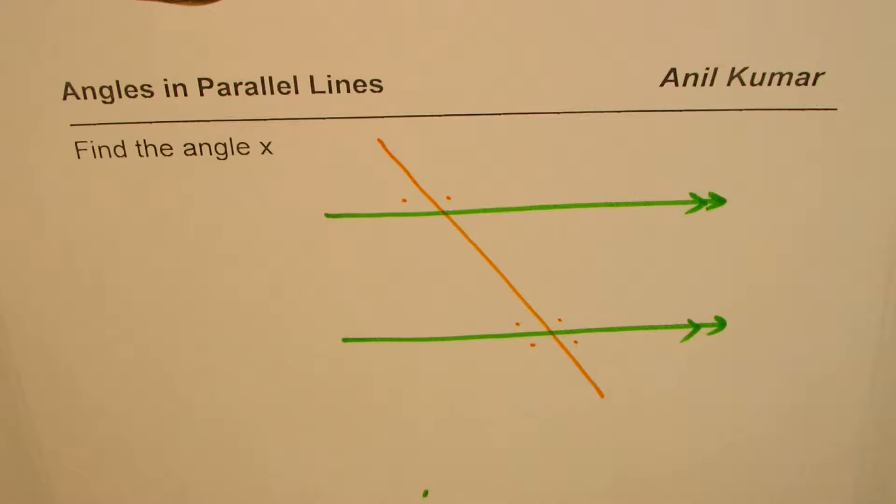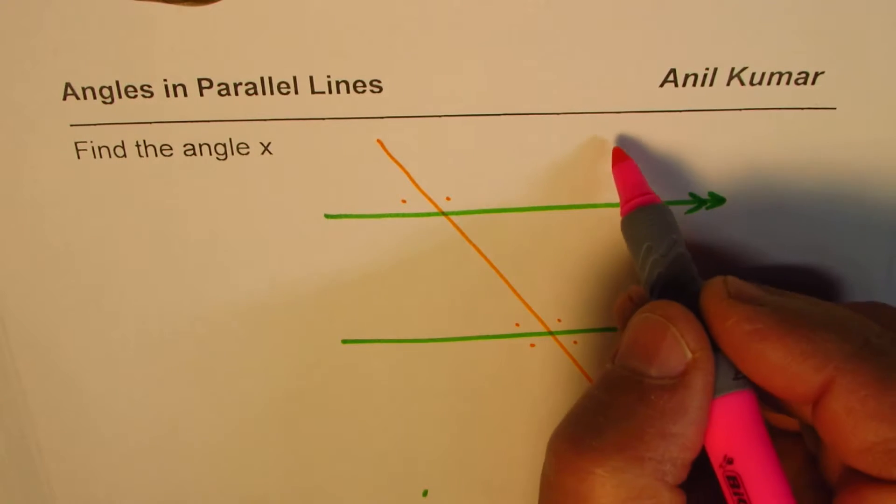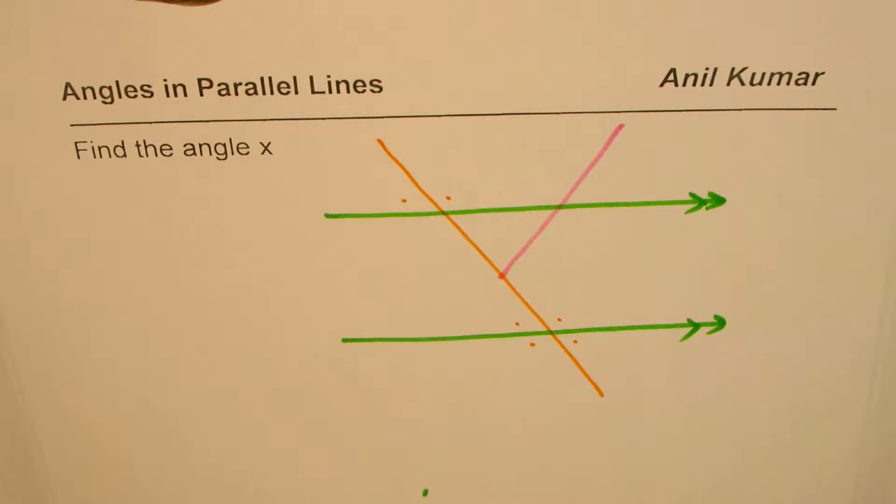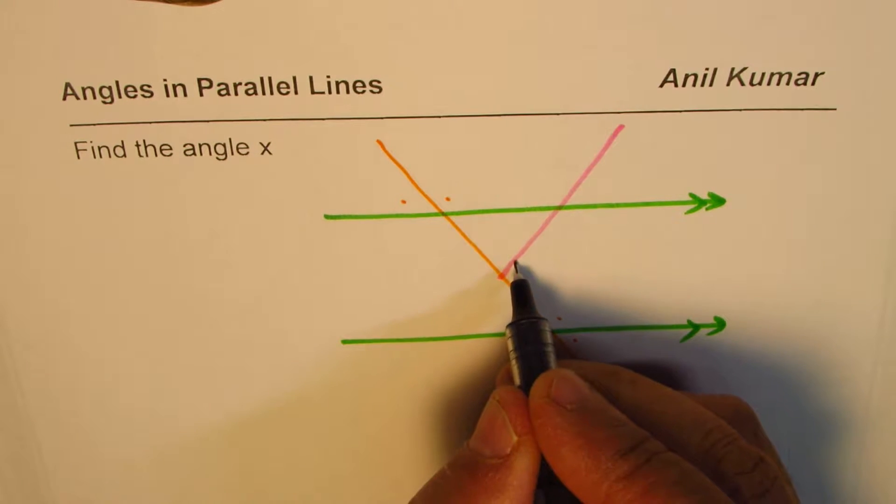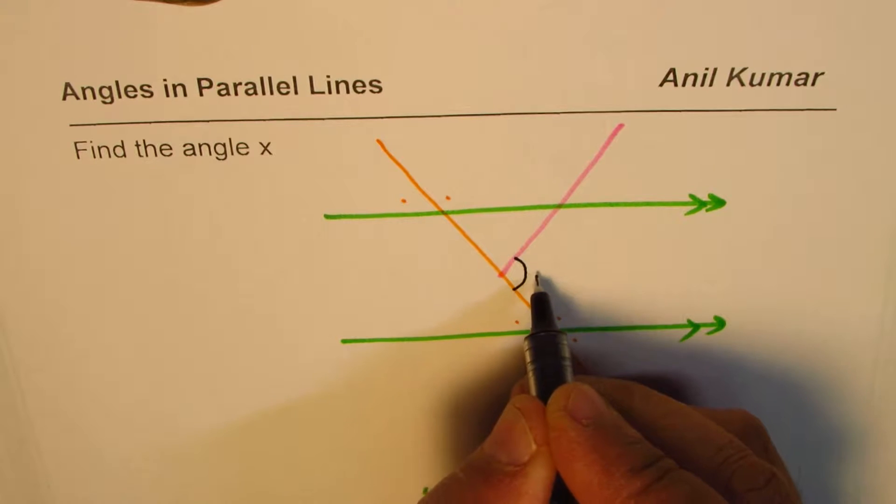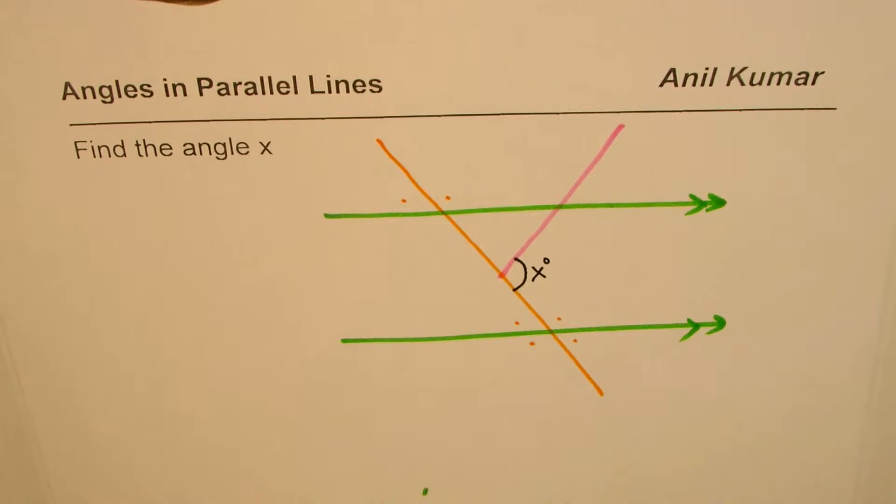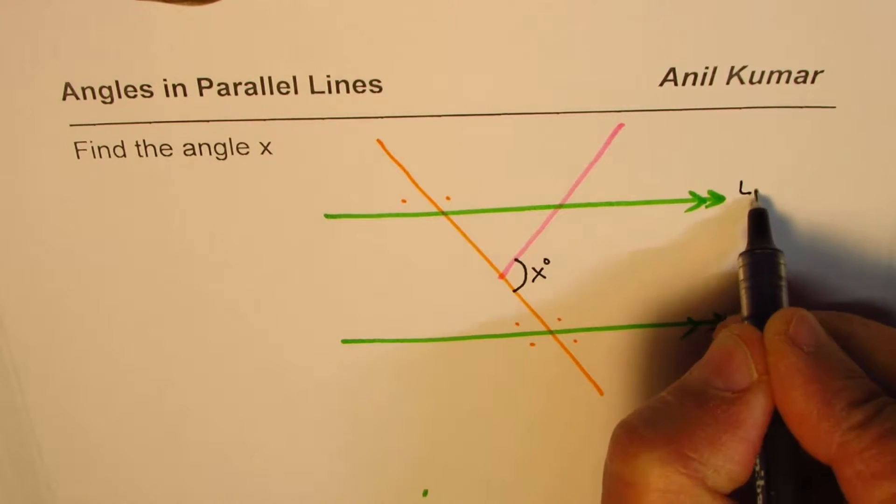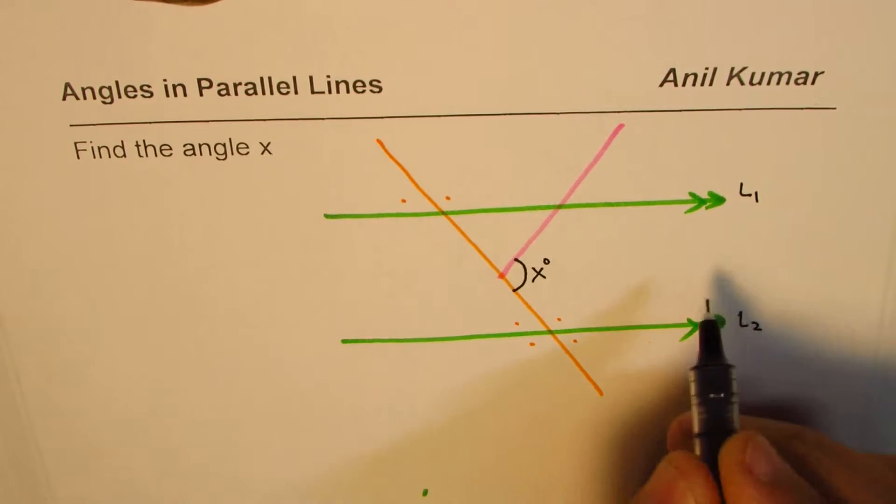Now here is a variation to the question. So what I'm doing this time is that I'm sketching another line right now and stopping somewhere there. And my question is that you need to find this angle which is at the intersection of these two lines. Now we have line one, this is line two, where line one is parallel to line two.